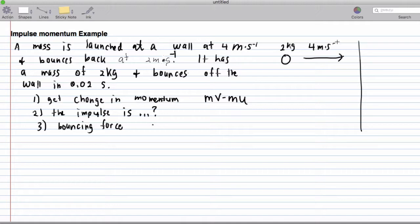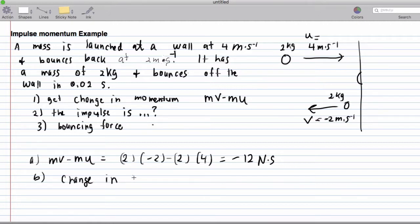And it goes in at four meters per second, then it hits the wall, and then it bounces back. This is two kilograms and it's bouncing back at two meters per second. Notice the negative sign because it's bouncing back. So let's get the change in momentum. So that's mv minus mu, which is going to be two kilograms times negative two minus two times four, and that's going to give me negative 12 newton seconds. Okay, now the impulse is the change in momentum.